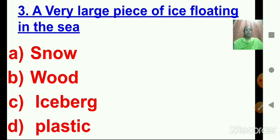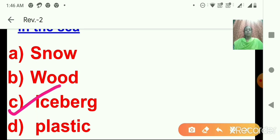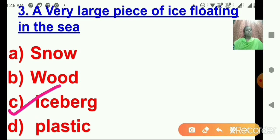Question number 3: A very large piece of ice floating in the sea — what is it called? A: Snow. B: Wood. C: Iceberg. D: Plastic. Absolutely correct, it is C — Iceberg. I will click on C.